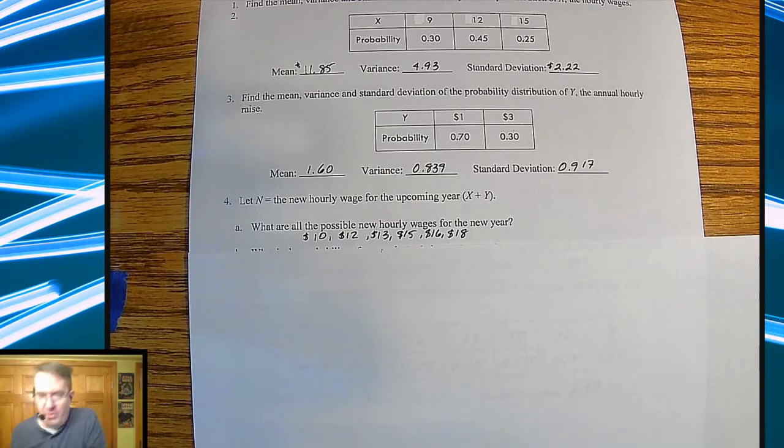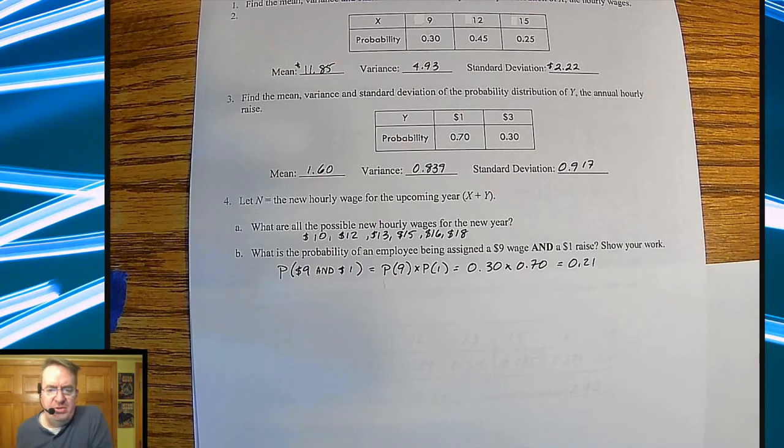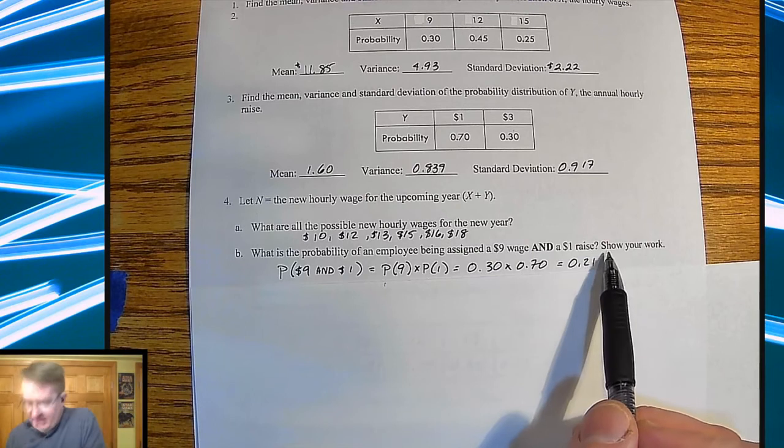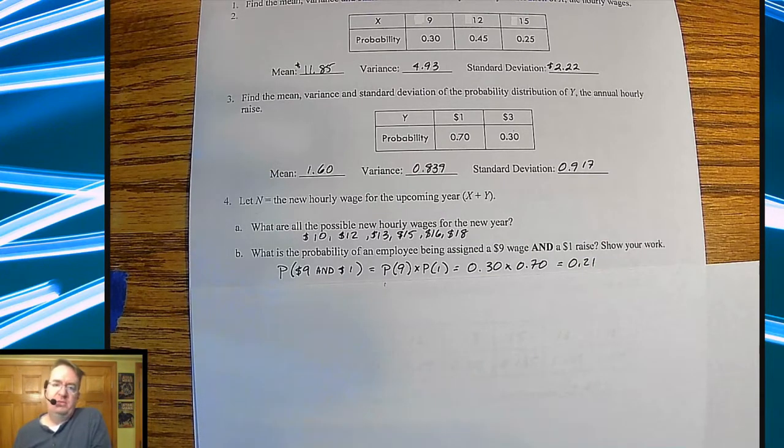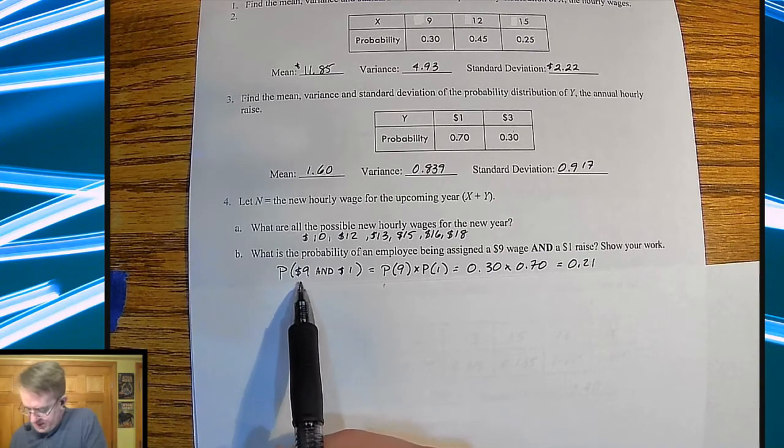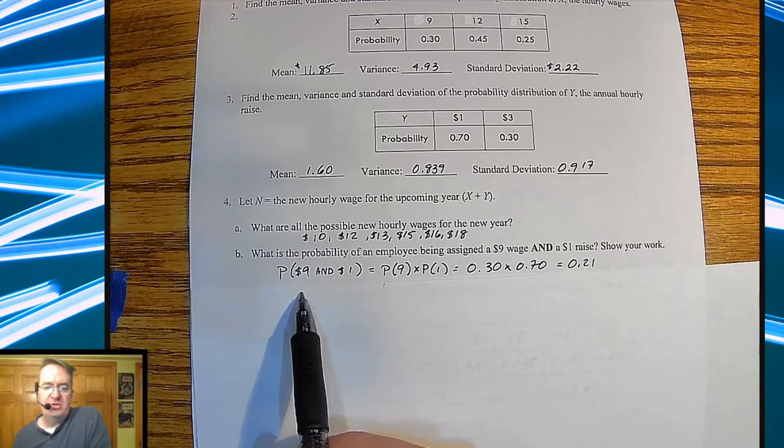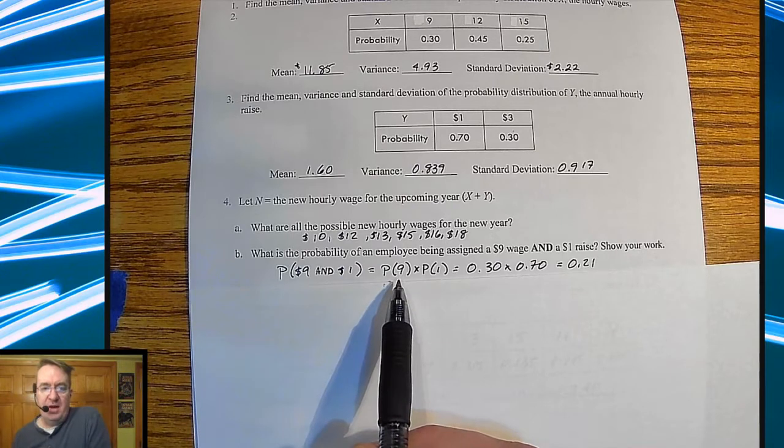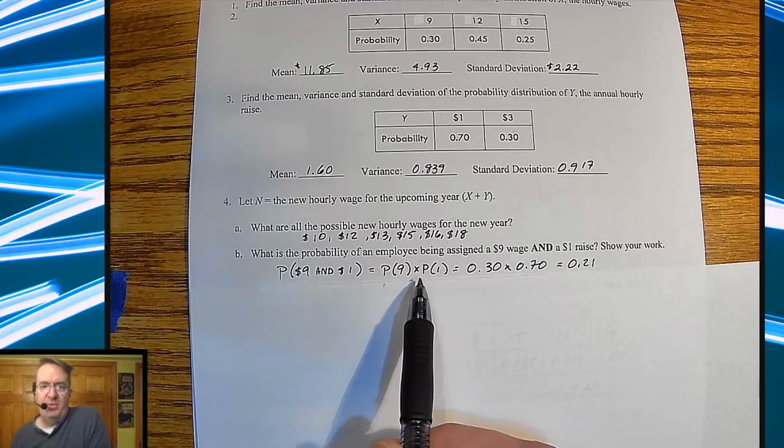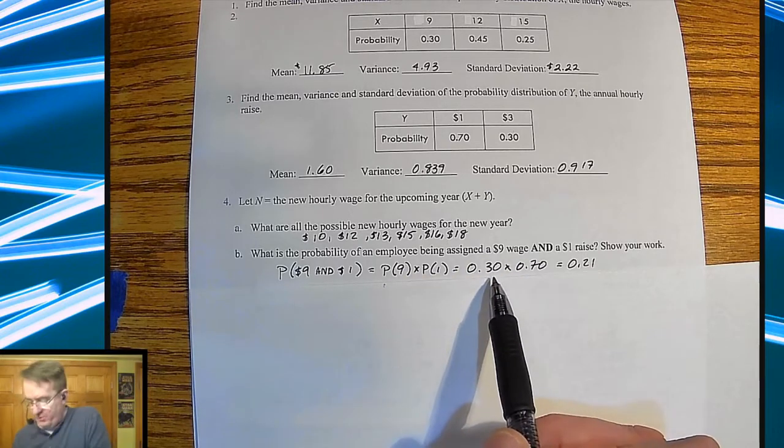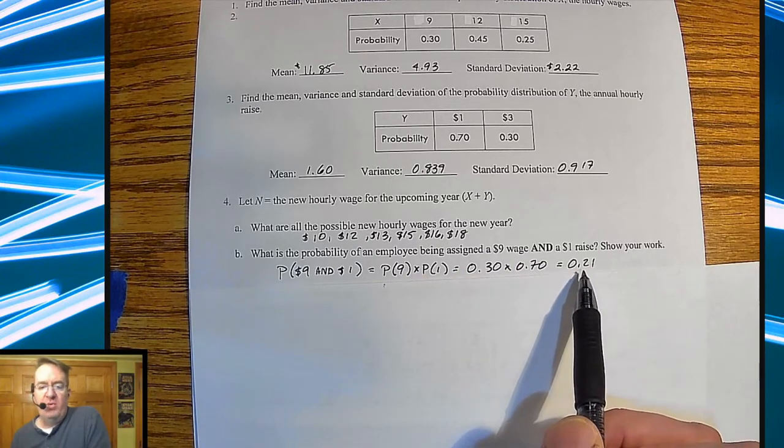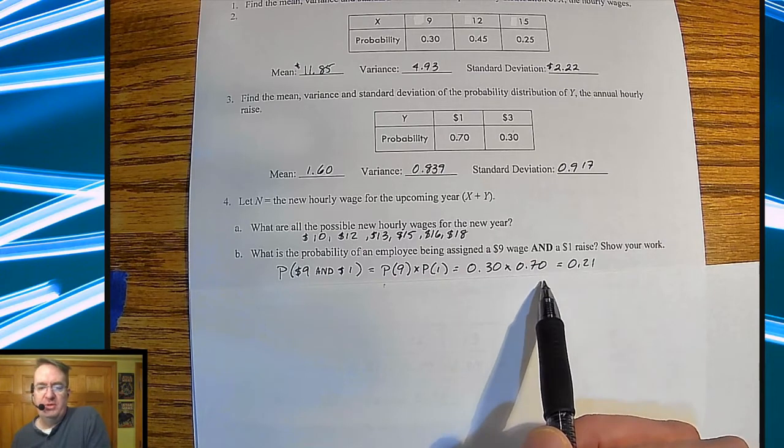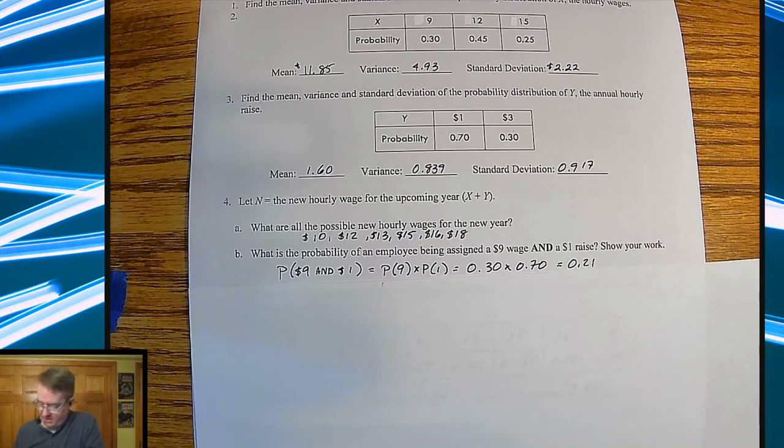So after the first year, while everybody's starting here, everybody is now at one of these three rates. And as you can imagine, what's the probability of getting a particular wage? So like right here, just as a review, what's the probability of being assigned a $9 wage and getting a dollar raise? Now, these are independent. There's no overlap between the two. They're two totally different variables. So we can just go ahead. We don't have to worry about taking out an intersection. So the probability of a $9 wage and a $1 raise is going to be the probability of a $9 wage initially and the $1 raise after that. So that means I get 30% times 70%. And 21% of people are going to end up making $10 at the end of the first year.